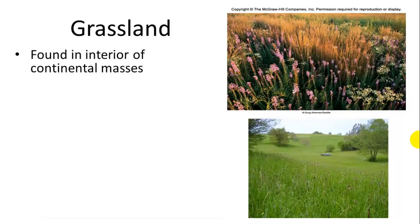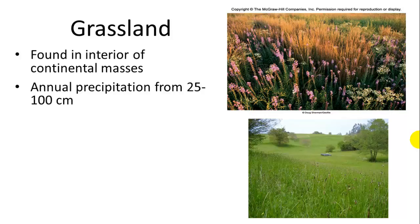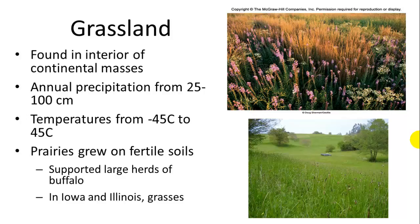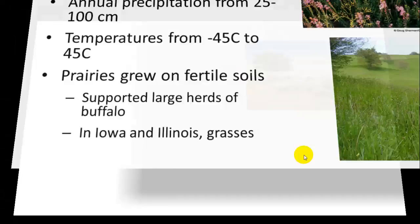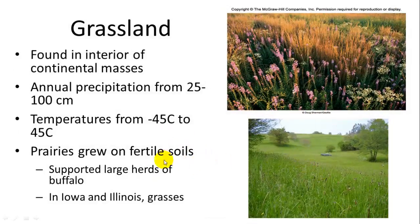Grasslands are found at lower latitudes in the interior of continental masses. Annual precipitation is not super high — 25 to 100 centimeters a year. Temperatures range from negative 45 degrees Celsius to 45 degrees Celsius above, quite a vast range. They have very fertile soils with lots of tall grasses, and historically they supported large herds of buffalo, but now we use them for cattle.